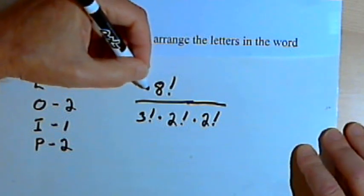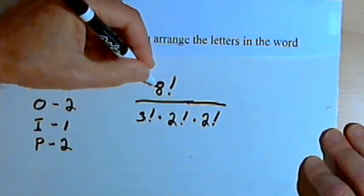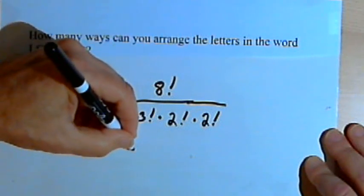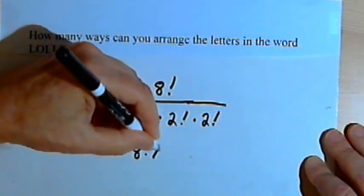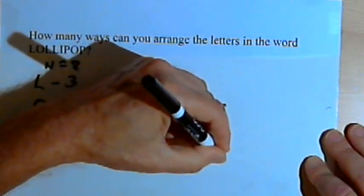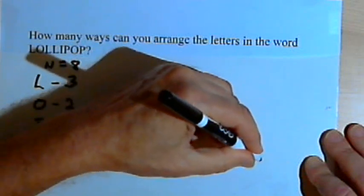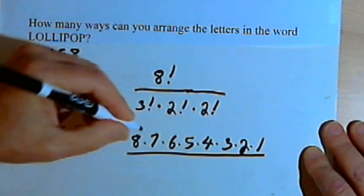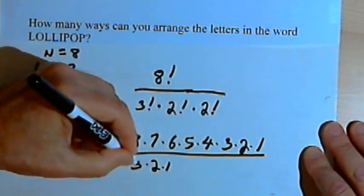And now we can see what this looks like when we convert all those factorials into multiplications. So 8 factorial is 8 times 7 times 6 times 5 times 4 times 3 times 2 times 1. 3 factorial is 3 times 2 times 1.